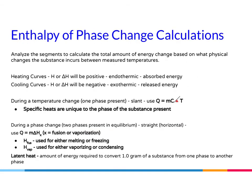Now let's look at what we need to do for calculations. When you calculate the enthalpy or delta H — which for you is Q — that is the change of heat or work in the system. We'll analyze segments to calculate the total amount of energy change based on what physical changes the substance incurs between the measured temperatures. For heating curves, H or delta H will be positive and endothermic — absorbed energy. For cooling curves, H or delta H will be negative and exothermic — released energy.